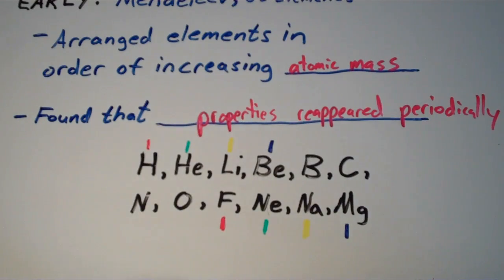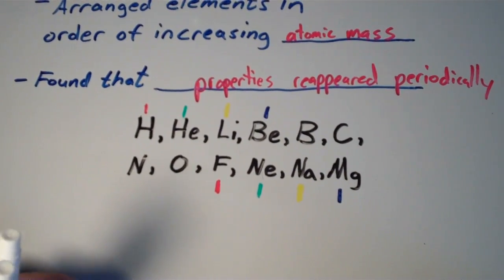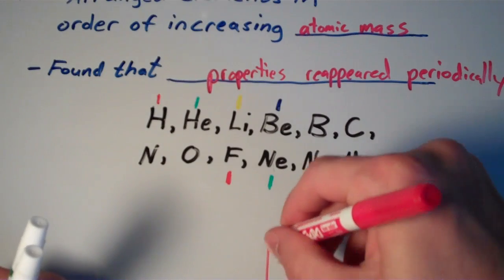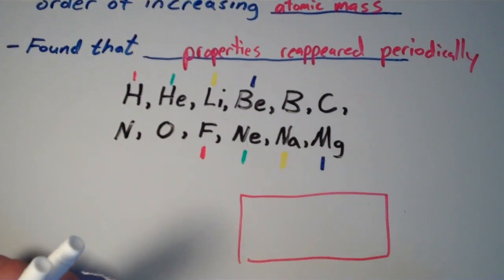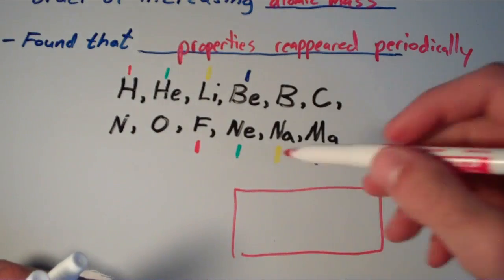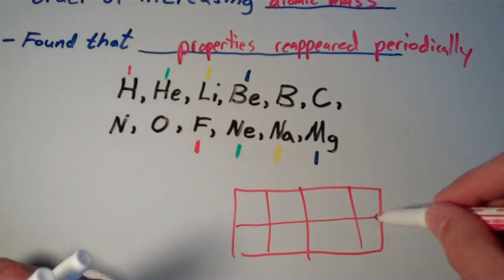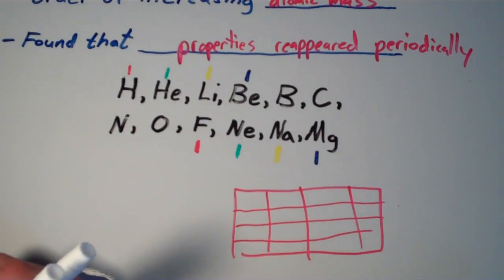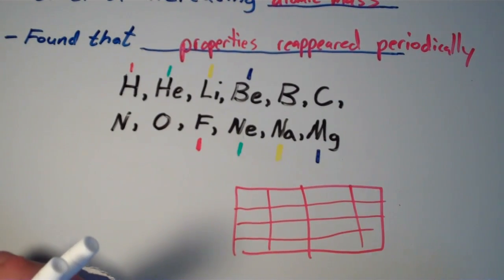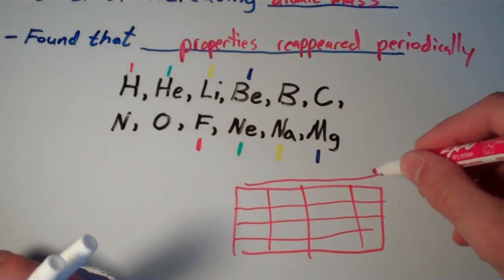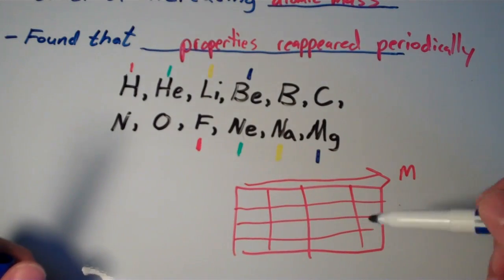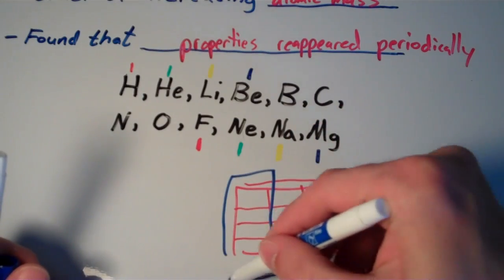That was what the early periodic table was based on. What he did was take this data and arrange a simple table. Let's say that's my table. This table has rows and columns. In each row, from left to right, the atomic mass was increasing. The rows were arranged in such a way that the columns would have elements that all had similar properties.